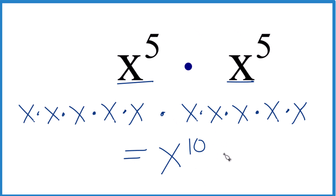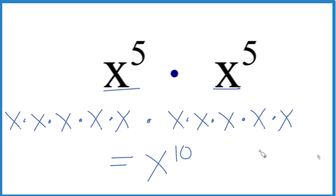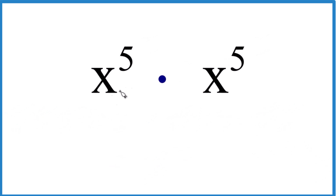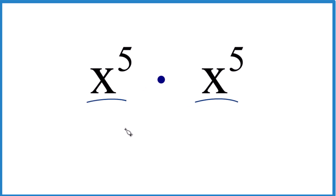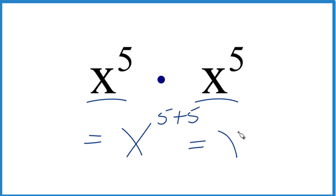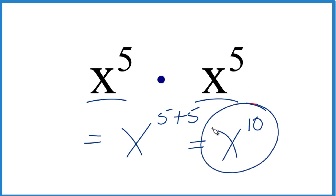There's another way we could do this — it might be a bit quicker. We could recognize that we have x here and here, so these are the same. Then we could just say this would equal x to the fifth plus fifth. We add those exponents together and we end up with x to the tenth — the same answer we got before. So in answer to our question, x to the fifth times x to the fifth is x to the tenth.